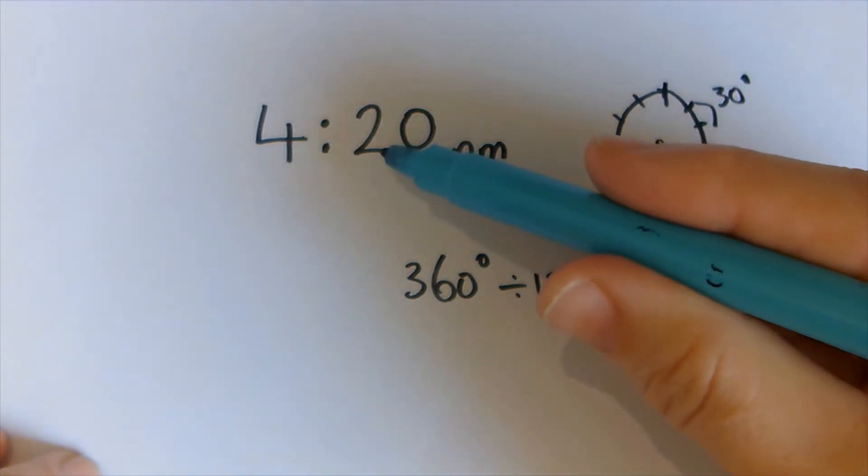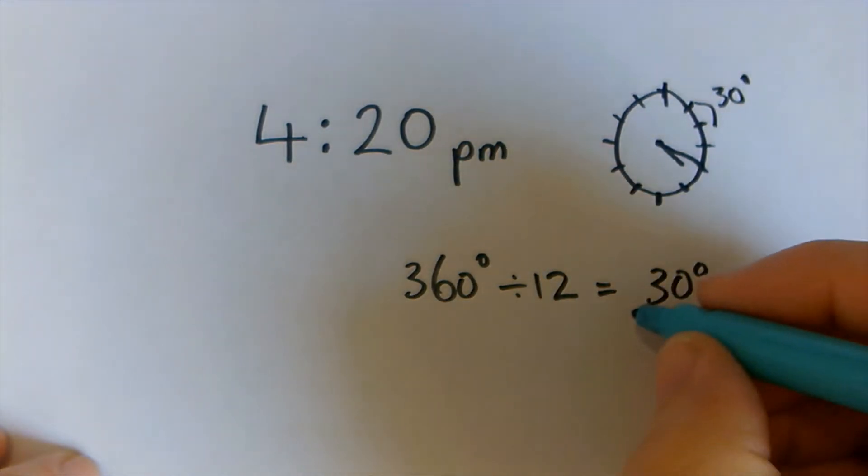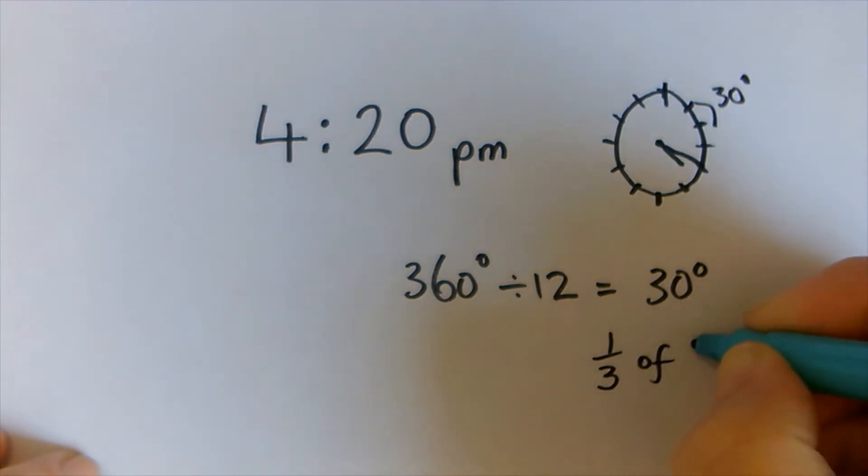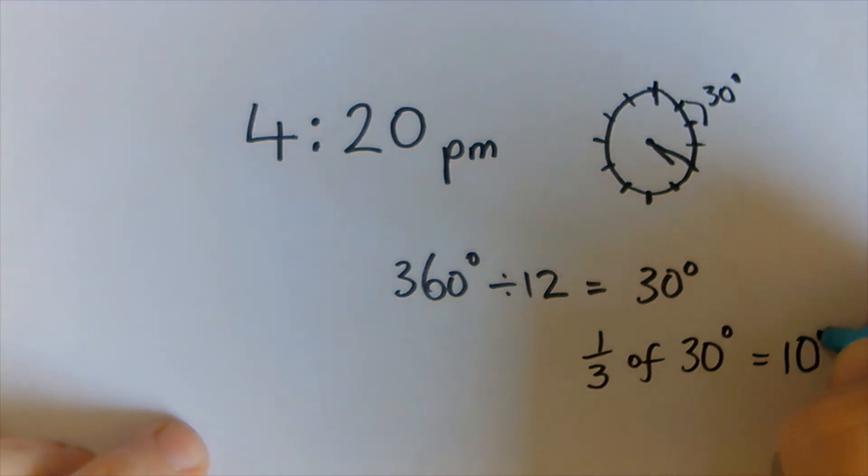So every little part is worth 30 degrees. And if you've gone on 20 minutes, that's one third of an hour. So if it's a third of 30 degrees, the answer is 10 degrees. Well done if you got that answer.